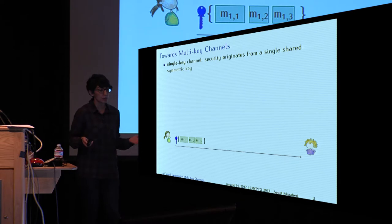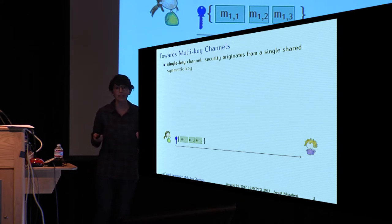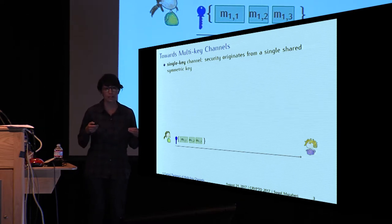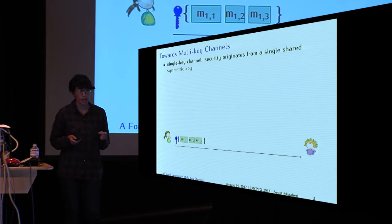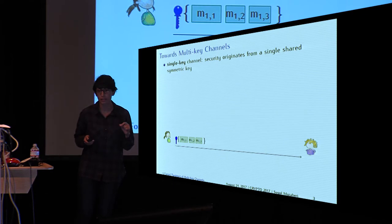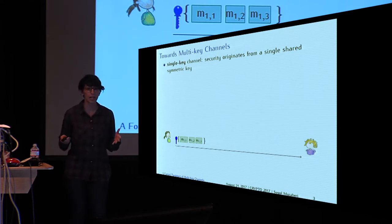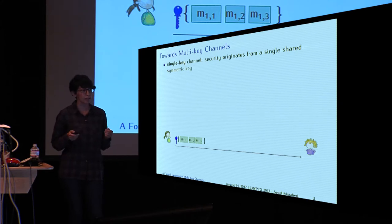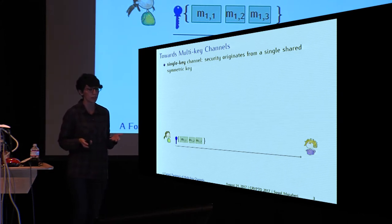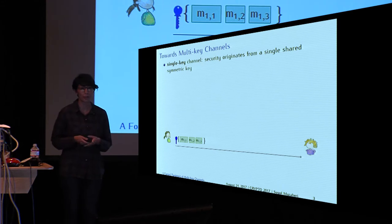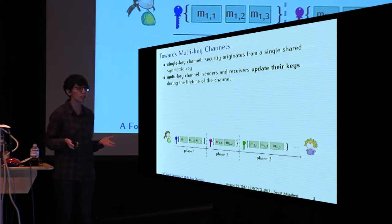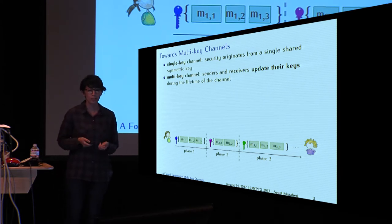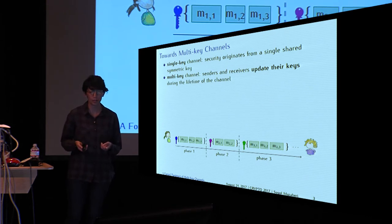The channel just described is basically a single-key channel because the security originates from a single shared symmetric key between Alice and Bob. If that one single key is compromised, then the security of the entire channel is going to be affected. Key compromise was a concern in the development of the upcoming version of TLS — TLS 1.3 — and what they did is consider a multi-key channel instead, where senders and receivers can update their keys during the lifetime of the channel.